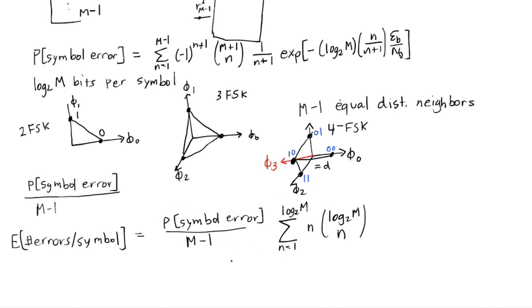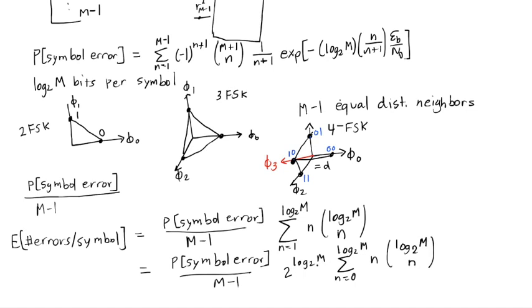So I can solve this because we've learned the binomial formula. So let's leave this first part the same. Let's bring out a factor of 2 to the log base 2 of M out front. And let's put in an n equals 0 here. Because n equals 0 is just going to be 0, so I don't need to exclude it from the sum. But to cancel out this 2 to the log base 2 of M here, I'm going to put in a 1 half to the log base 2 of M.